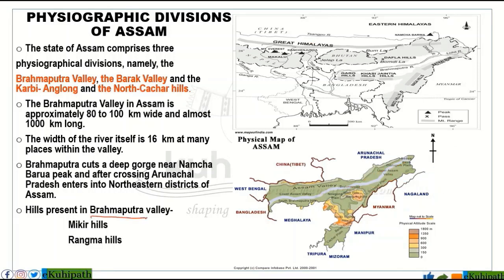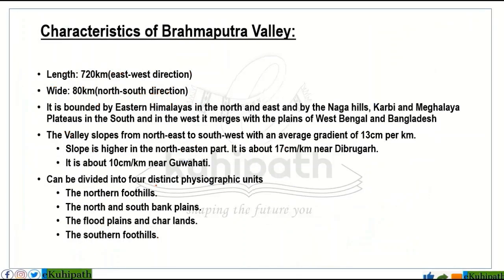The Brahmaputra Valley has important hills including Mikir Hills and Rengma Hills. Brahmaputra Valley has distinct physiographic units: the northern foothills, the north and south bank plains, the flood plains, and the southern foothills.